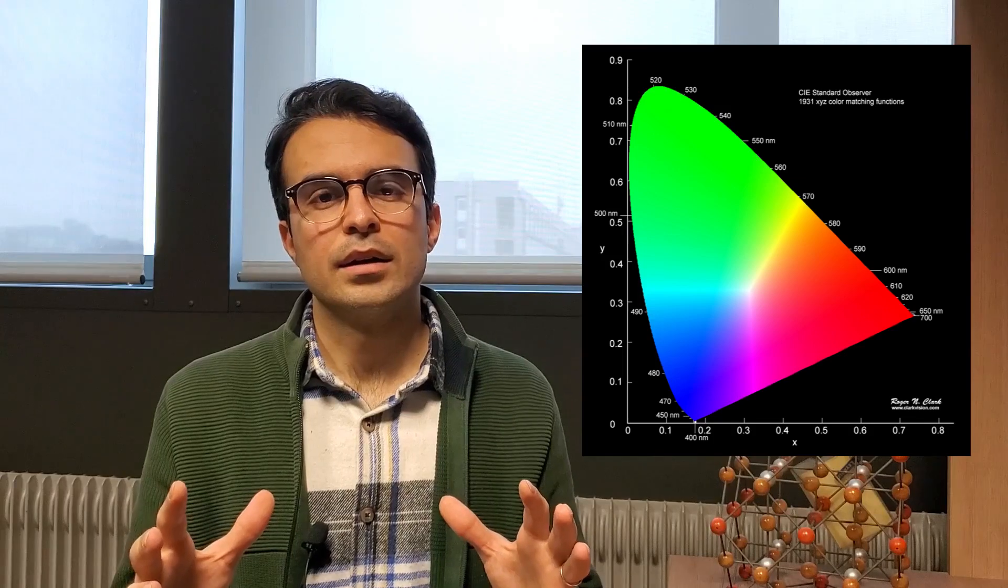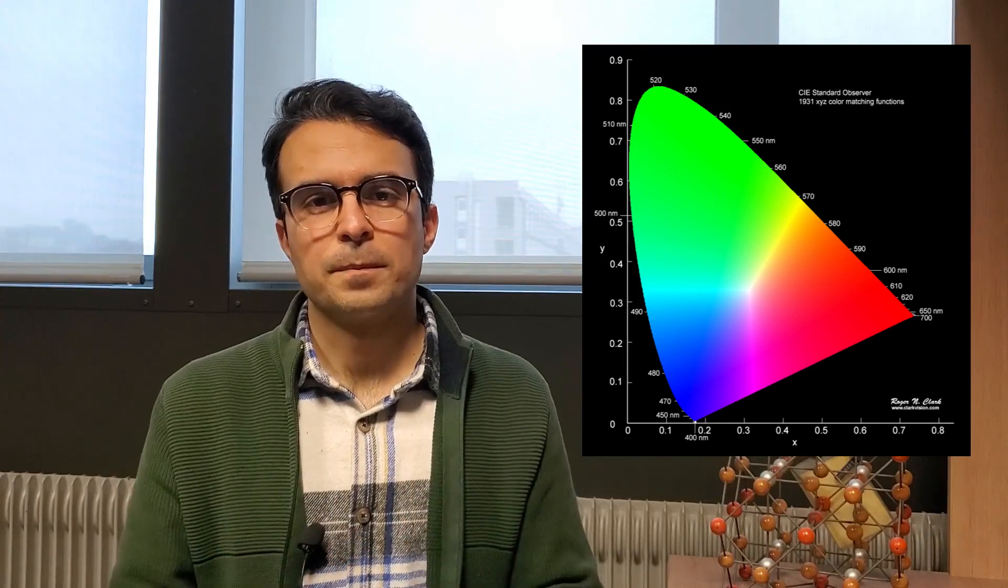In this case you have CIE XYZ that mostly in industry they use it and it looks like normally you represent it as a 2D color space that contains all the colors that you can imagine and it is like a horseshoe. So it is famous for horseshoe diagram or chromaticity diagram.